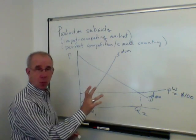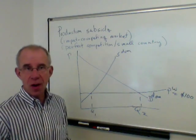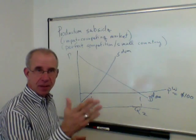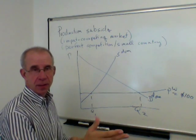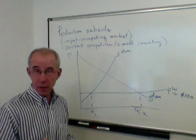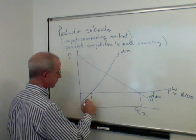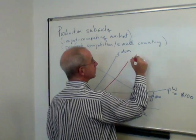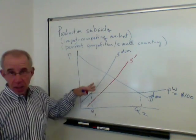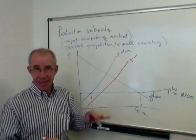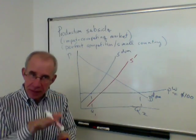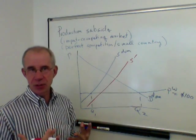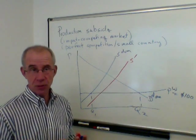Most importantly, you should think about it as reducing the cost to the domestic producer. Every time you make something, the government sends you a check that covers part of the cost of production. So in essence, what we're doing is shifting the supply curve down. I like to think about shifting down rather than out, as is often the case, because that really focuses on the changing domestic production costs.